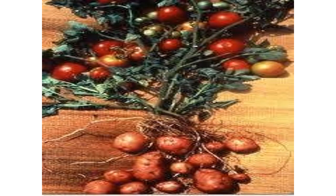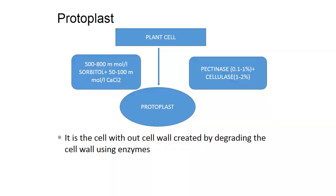One attempt through somatic hybridization is the pomato — the bottom or roots are like potato and the top is like tomato. In protoplast fusion, plant cells are treated with 500–800 millimoles per litre sorbitol plus 50–100 millimoles of calcium chloride. Pectinase and cellulase are used to eliminate the plant cell wall, isolating protoplasts — cells without a cell wall created by enzymatic degradation.